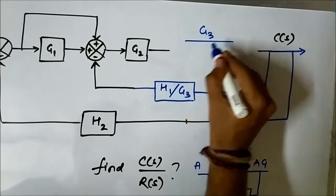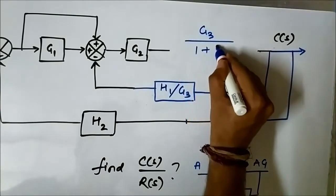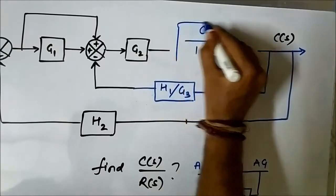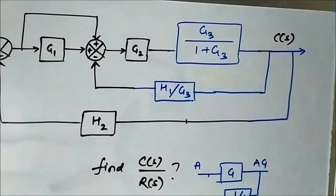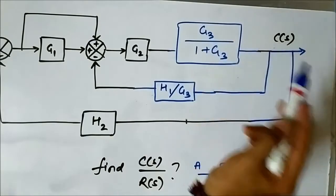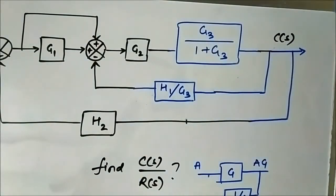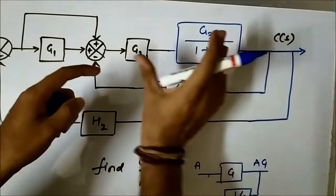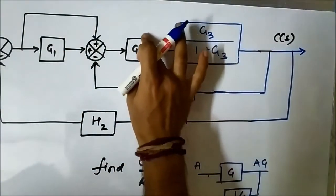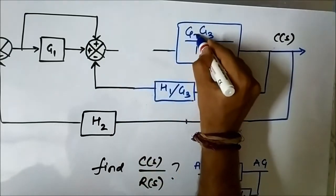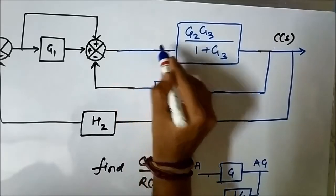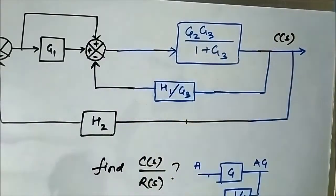We replace that block with G3/(1+G3). Now G2 and G3/(1+G3) are connected in cascade, so they are multiplied together and we get G2·G3/(1+G3) as the combined forward path block.